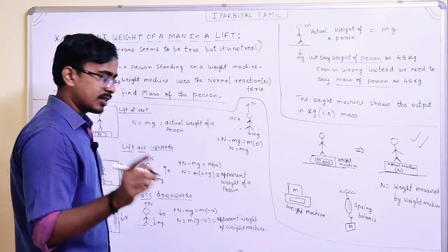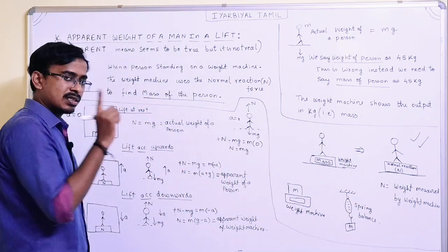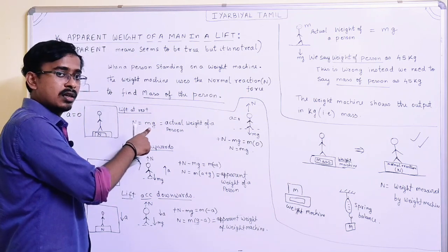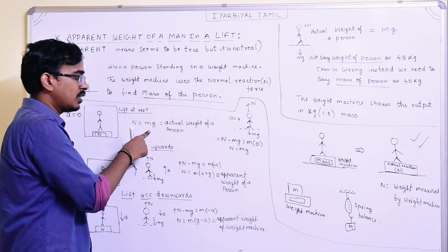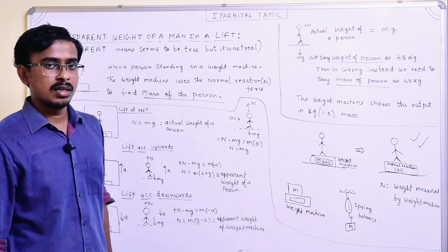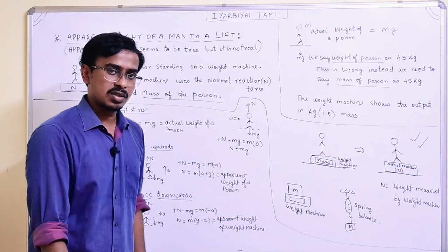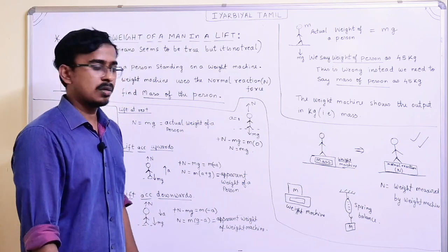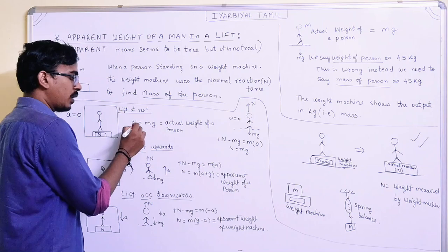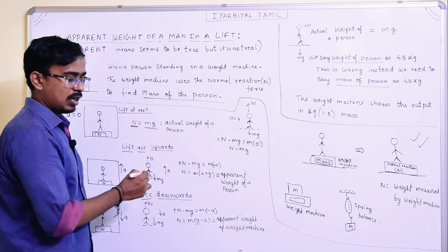So in the rest case, normal reaction is what the weight machine measures, which is nothing but M into g — the actual weight of the person. The normal reaction equals the actual weight. The weight machine reading equals Mg.